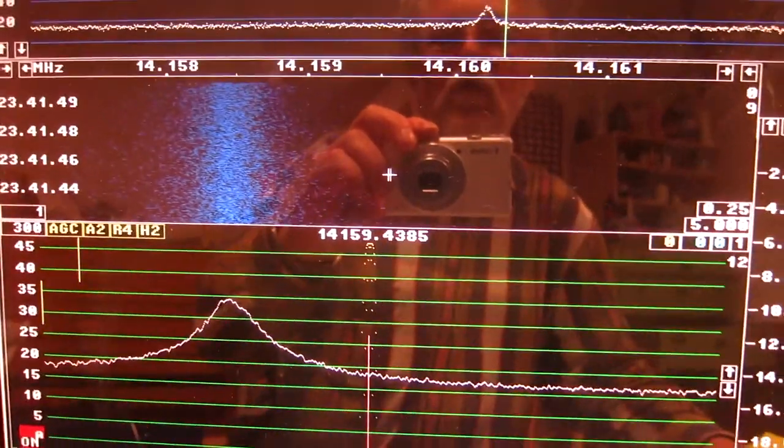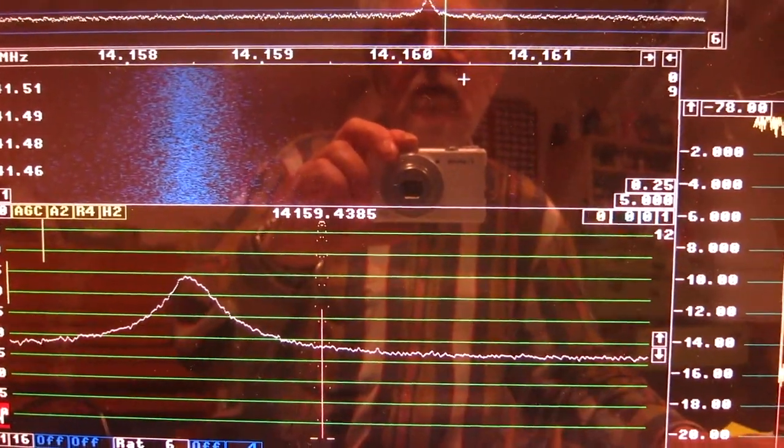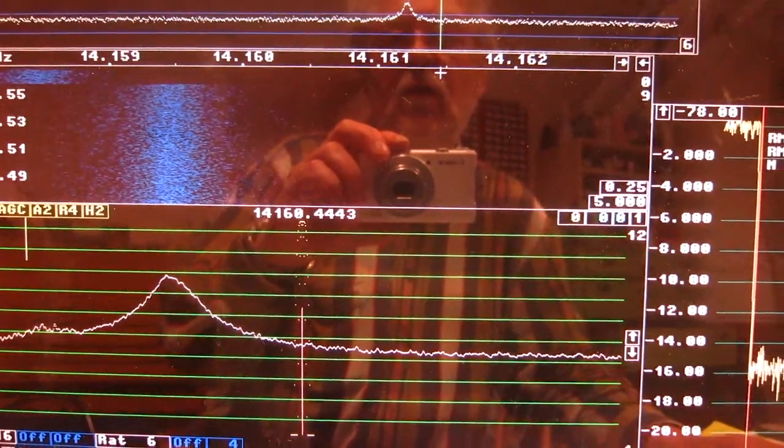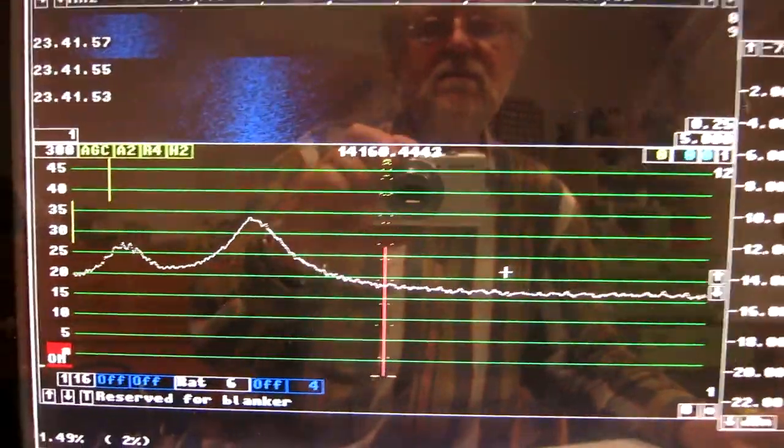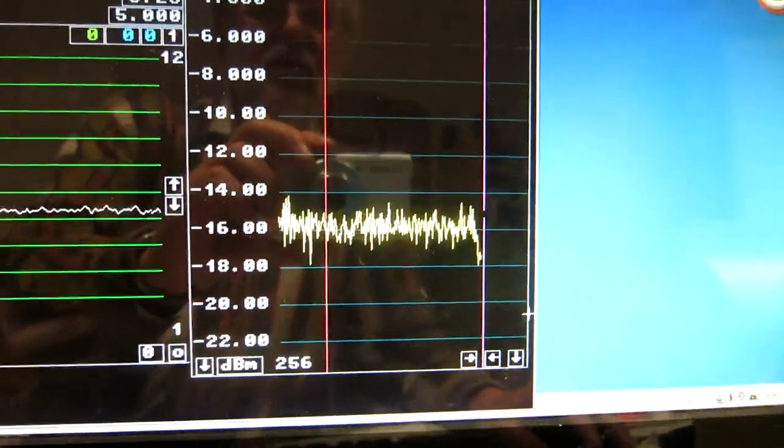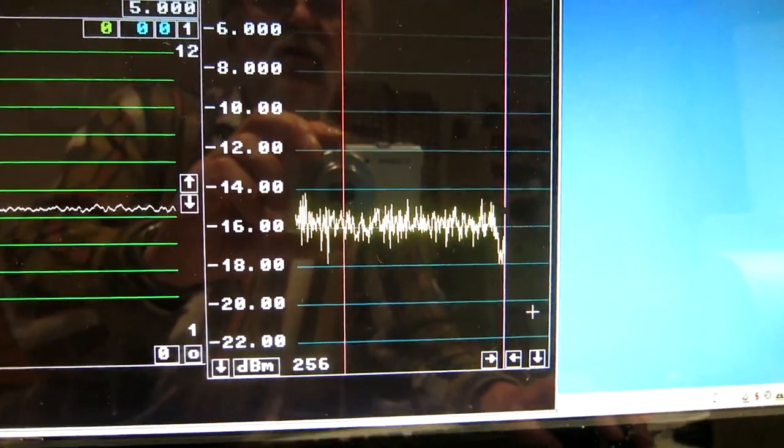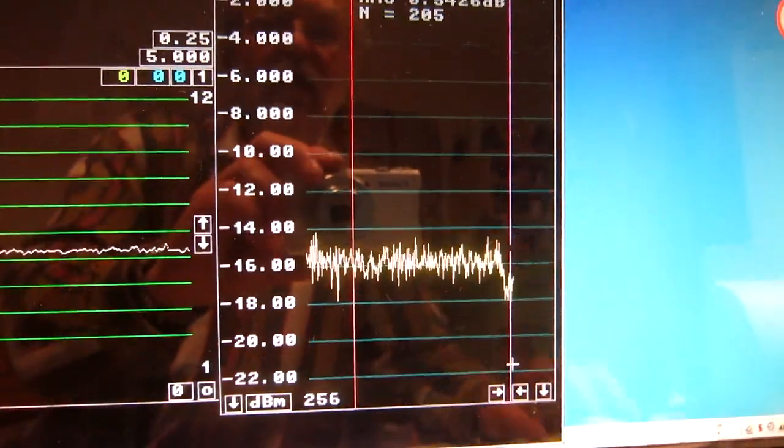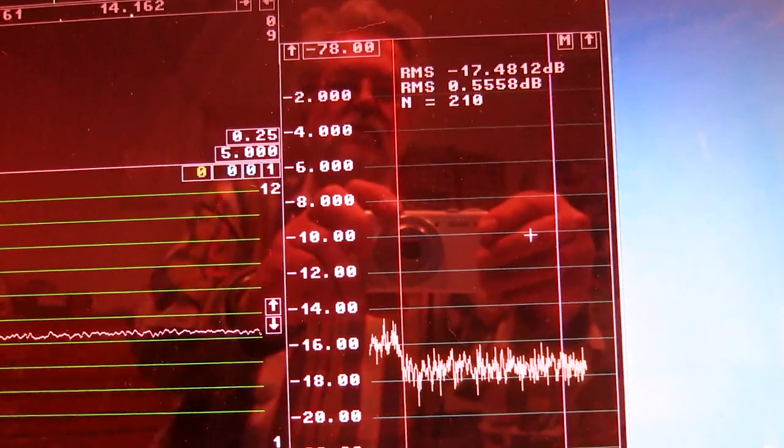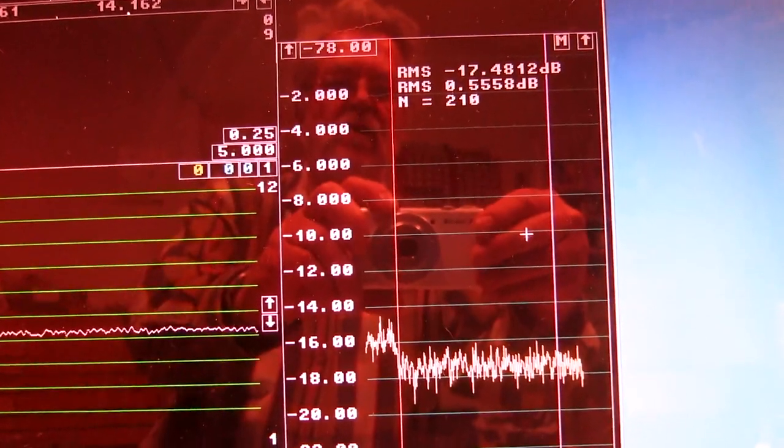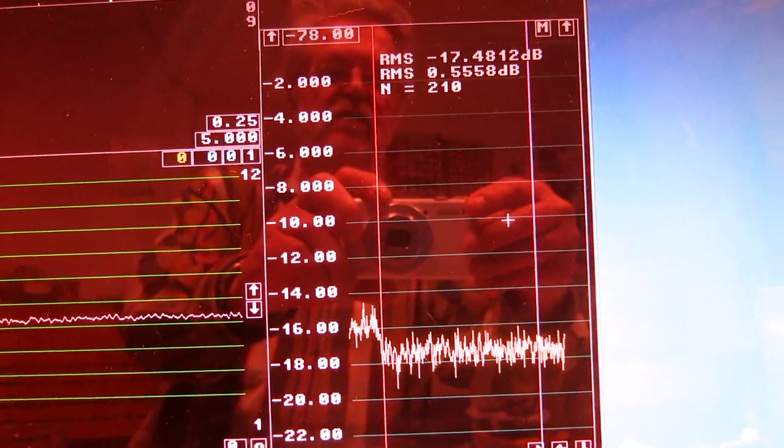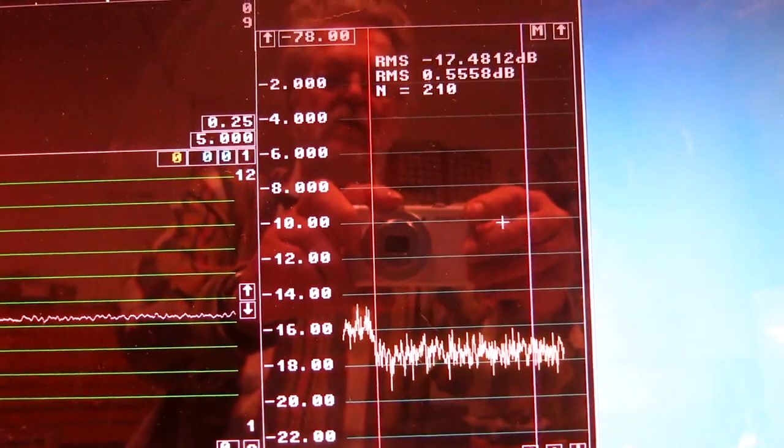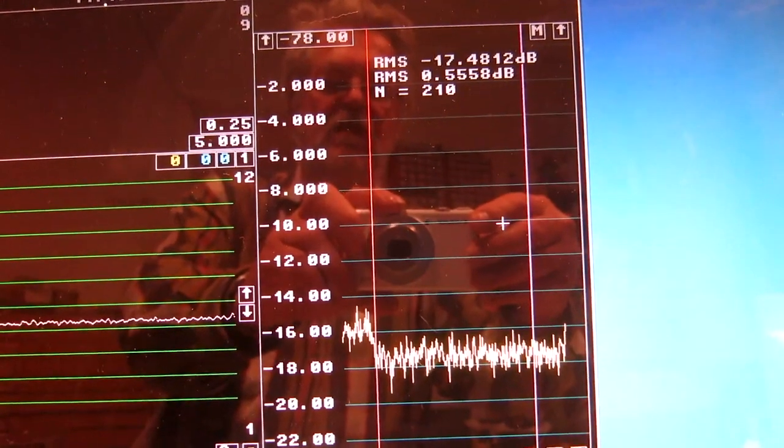I go one more kilohertz away, it will be about here. As you can see, the noise floor steps down another about 2 dB. So at 2 kilohertz, I see 17.5 decibels below the noise at the center frequency.